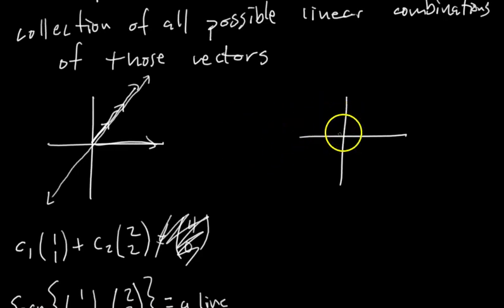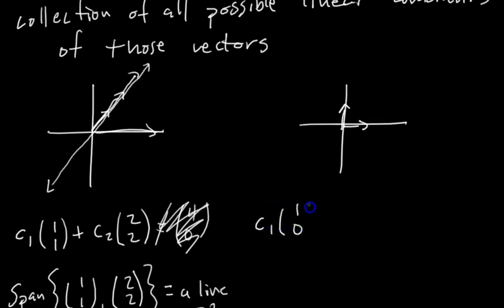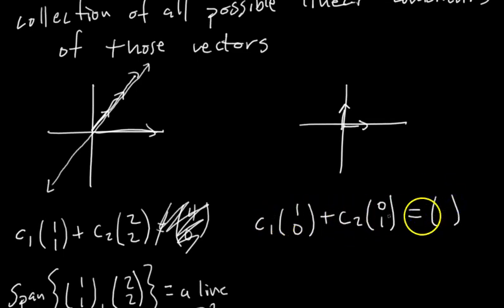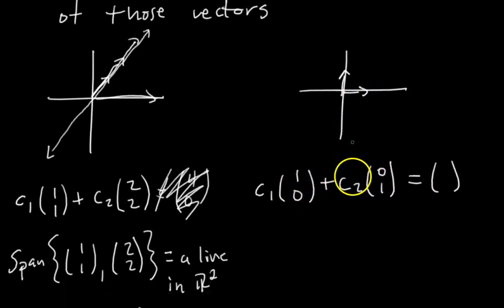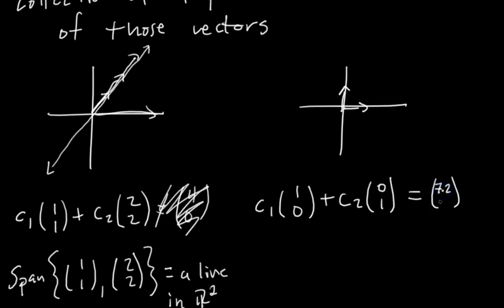Now let's consider two vectors in R2 that are not collinear — linearly independent. Take the vectors [1, 0] and [0, 1]. The general linear combination is C1 times [1, 0] plus C2 times [0, 1]. You can pick any numbers to be the entries of the output vector. For example, [7.2, -4]: just set C1 = 7.2 and C2 = -4. Any vector is reachable.